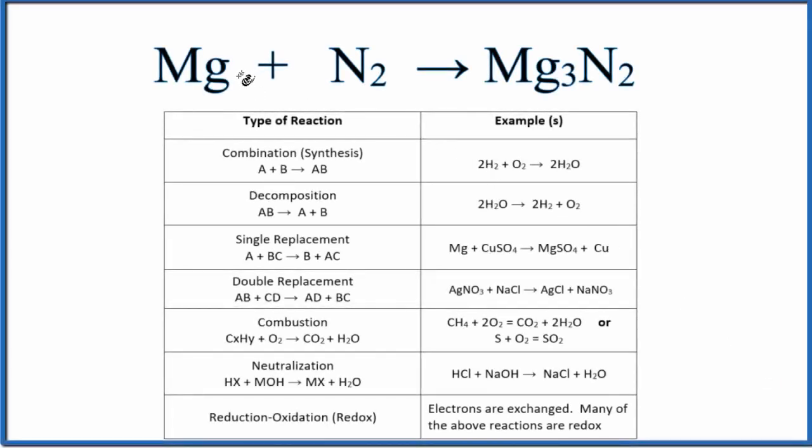In this video, we'll look at the type of reaction for Mg plus N2 yields Mg3N2. So we see we have two reactants coming together to form one product. That's going to be a combination or a synthesis, kind of an A plus B gives us AB.